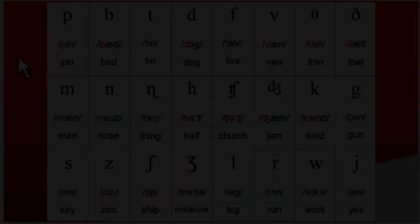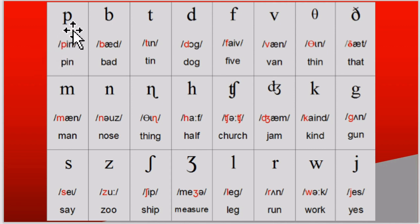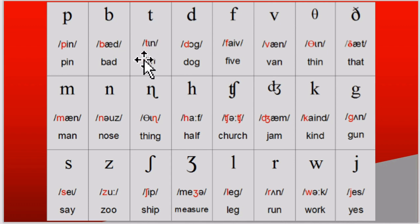So let's look at the consonants of English. These are the consonant sounds of English. These are not letters of the alphabet — these are phonetic symbols. P as in pin, B as in bad, T as in tin, D as in dog.